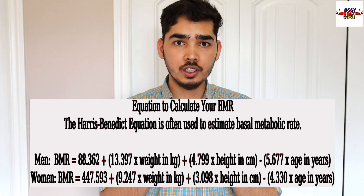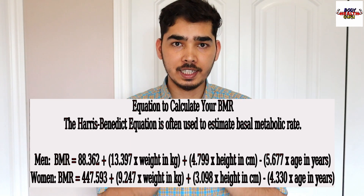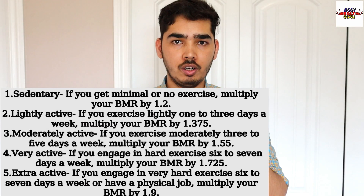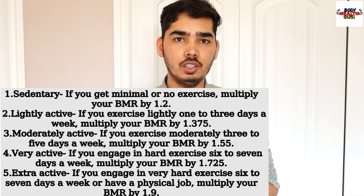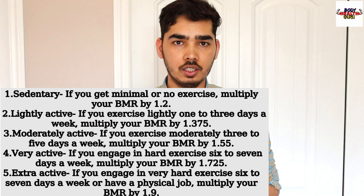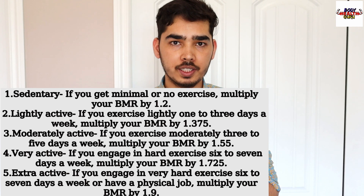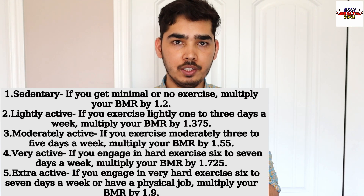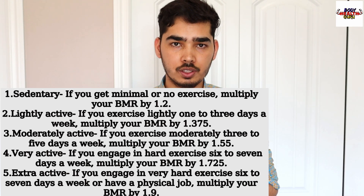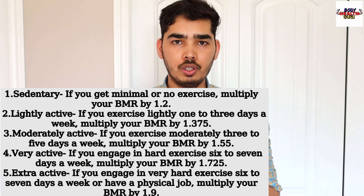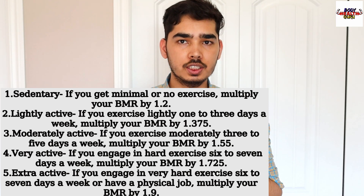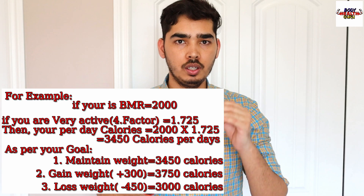These daily activity calories are based on your lifestyle, which depends on five factors — you can see them on the screen. Your daily calorie total is simple: you just multiply your BMR by your daily activity number. Once you have your calories-per-day number, you can also see an example on the screen.